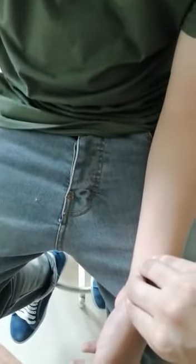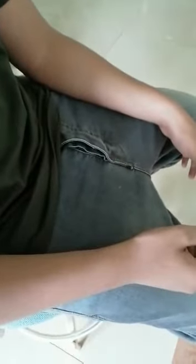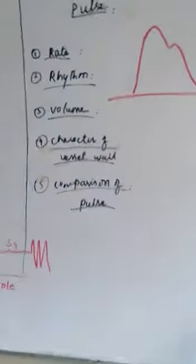You compare both radial pulses to check for radio-radial delay. Next, check for radio-femoral delay. The femoral artery is located just beneath the inguinal ligament at the mid-inguinal point — there must be proper exposure for this. After completing the examination, thank your subject and then explain your findings to the examiner.